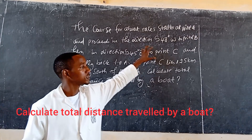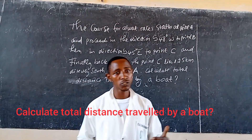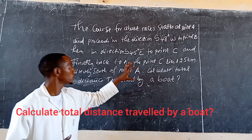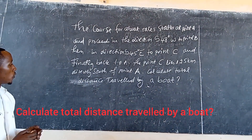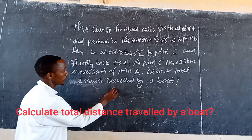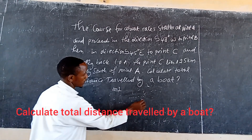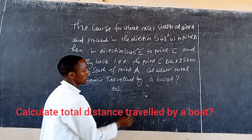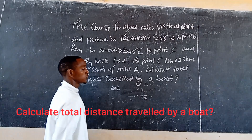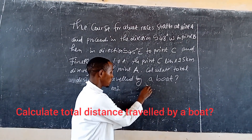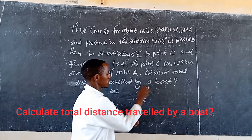This question is about bearings. To answer that question we use a graph to draw a scale reduction. First of all we draw a point. Point A is located, and this is the direction of north.